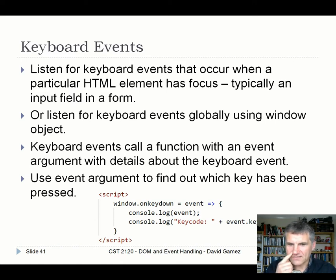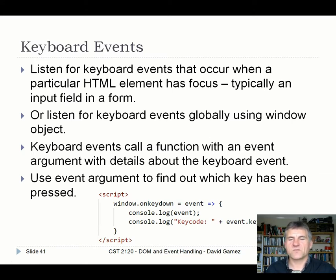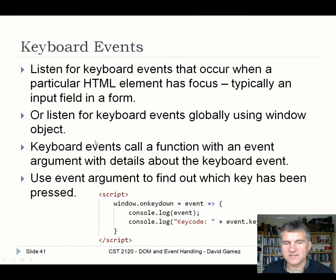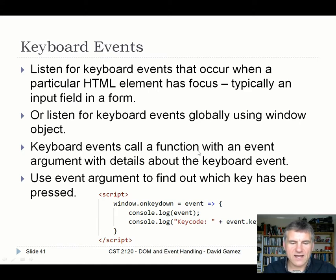The better approach is to listen for keyboard events globally using the window object. The window itself will generate keyboard events, which are then passed down to the elements that have focus. This is the better approach if you're doing something like a game — it's generally easier and more reliable than relying on focus, except when you're typing into a form. If you listen globally, you can just call a function just like any other event.